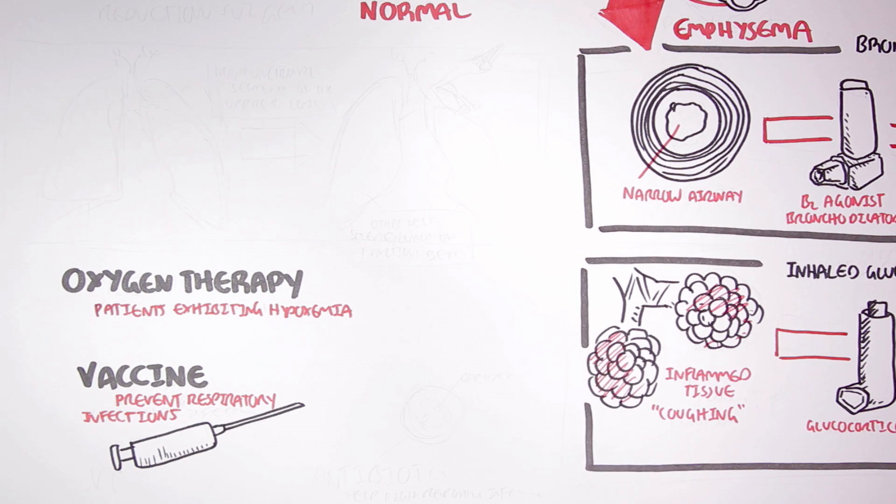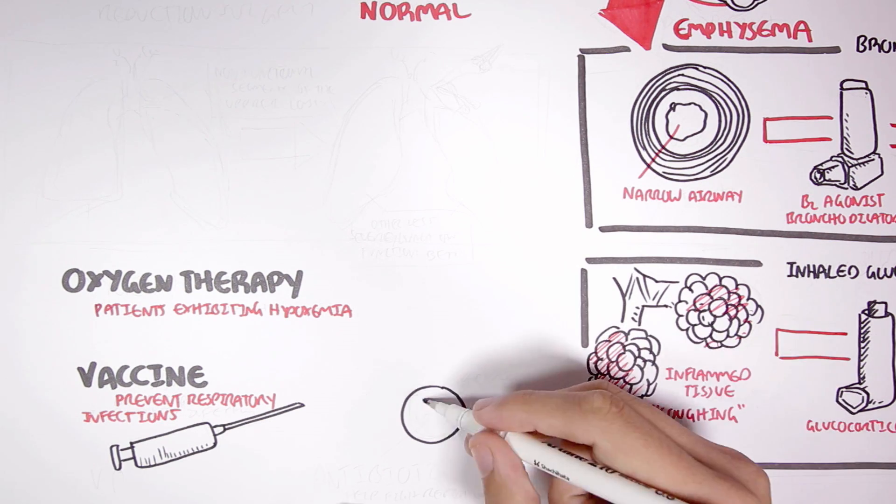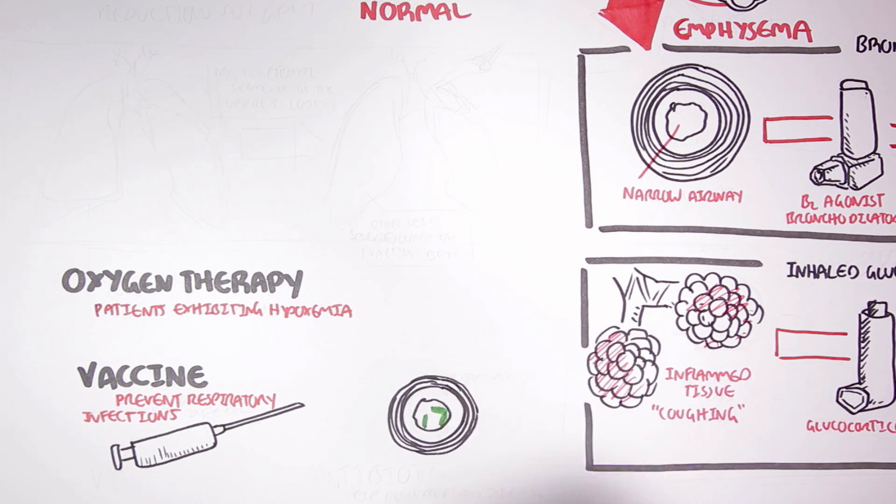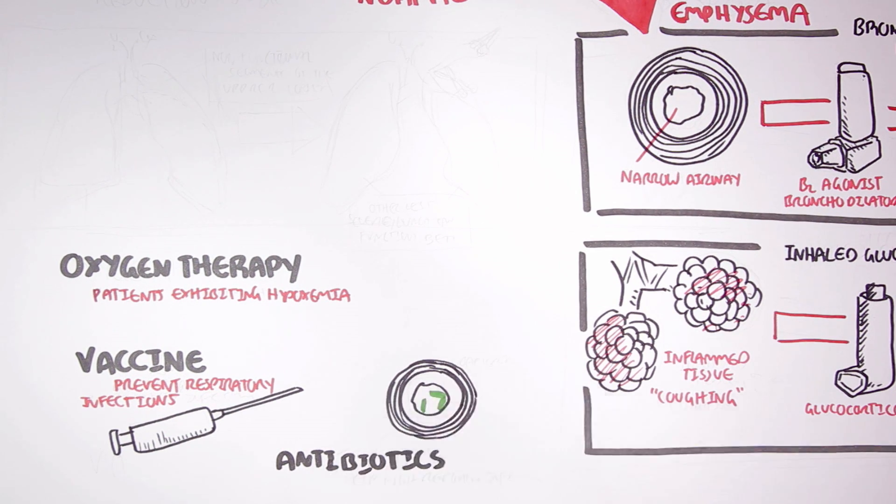If a person does contract an infection and is suffering from chronic bronchitis, for example, antibiotics are used to clear up and manage the infection.